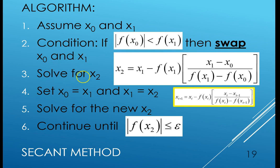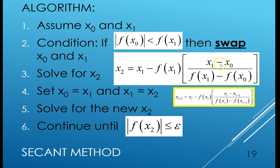The next step is to solve for x sub two. In many literature sources you'll see a variation using x sub i+1, x sub i, and f(x sub i), but for easier understanding I use two, one, and zero — where two is the next value and zero is the one before. So x sub two equals x sub one minus f(x1) multiplied by (x1 minus x0), all over f(x1) minus f(x0). Sometimes you'll see this written as x sub zero minus x sub one over f(x0) minus f(x1) — both are equivalent.